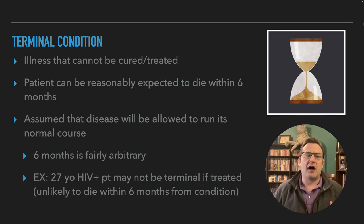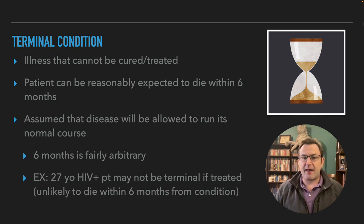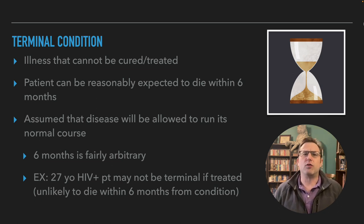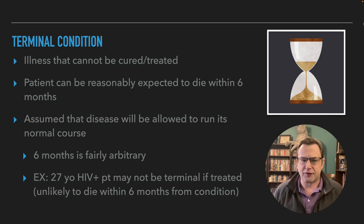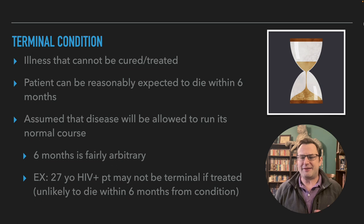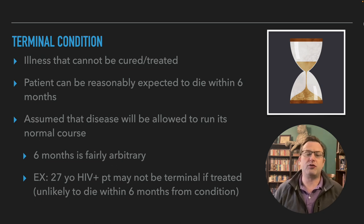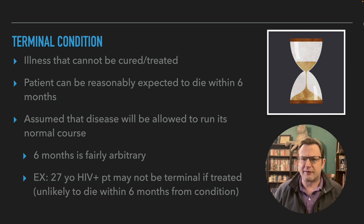We're going to discuss a terminal condition — that's the prerequisite for hospice care and end-of-life care. A terminal condition is vaguely defined as an illness or condition that can't be cured or treated, and that a patient can reasonably be expected to die from within six months if no other interventions are taken, assuming the disease is allowed to run its normal course. The six months is fairly arbitrary — you have to draw the line somewhere. In long-term care, the case is revisited every six months.